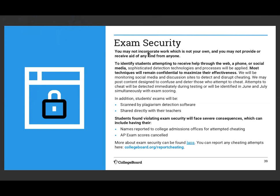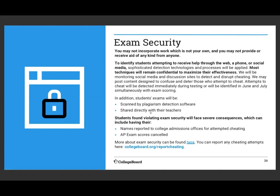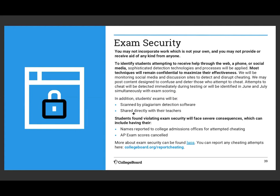You may not incorporate work that is not your own or receive aid from anyone. College Board will use sophisticated detection technologies to identify students attempting to receive help through the web, phone, or social media — and most techniques remain confidential. Every answer will be scanned by plagiarism detection software and shared with me as well. If you are found violating exam security, you will face severe consequences including having your name reported to colleges for attempted cheating and having your scores canceled. Just don't cheat.